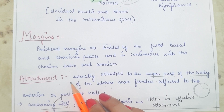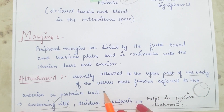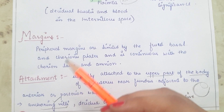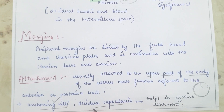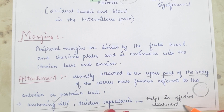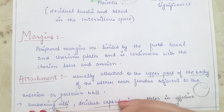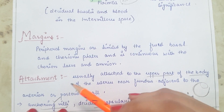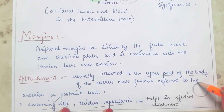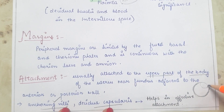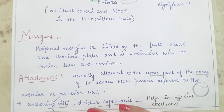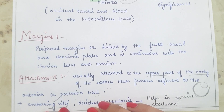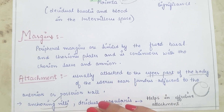The placenta is normally attached to the upper part of the body of the uterus near the fundus, either to the anterior or posterior wall. The anchoring villi and decidua capsularis help in effective attachment of the placenta to the decidua basalis. That concludes placental development and the placenta at term. If you have any queries, please ask in the comment section.